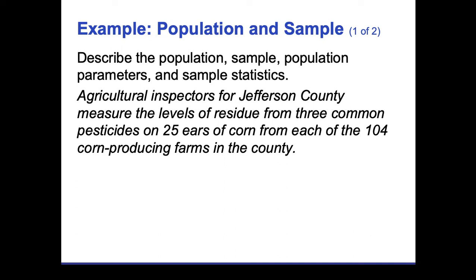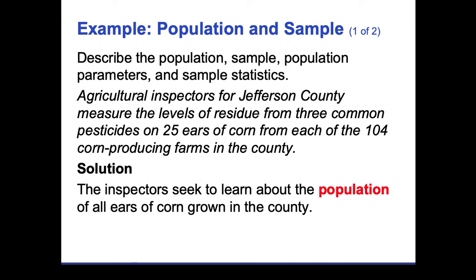Agricultural inspectors for Jefferson County measure residue from three common pesticides on 25 ears of corn from each of the 104 corn-producing farms in the county. The population here is all ears of corn grown in the county. They only took 25 ears from each farm — obviously there are far more than 25 ears per farm. It would be impossible for inspectors to examine every single ear of corn, so they check a sample.